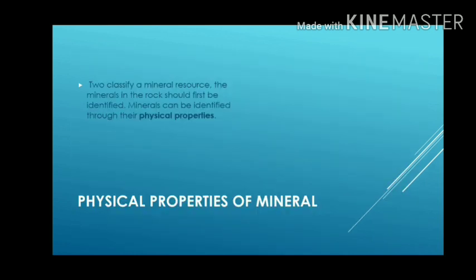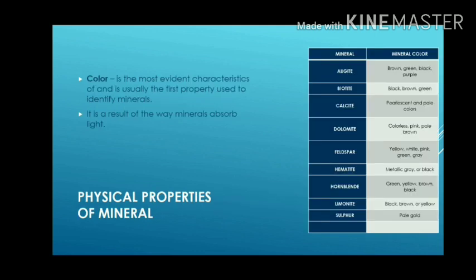To classify mineral resources, the minerals in the rock should first be identified through their physical properties. The first physical property is color. Color is the most evident characteristic of a mineral and is usually the first property used to identify minerals. It is a result of the way minerals absorb light. The minerals in the table include augite, biotite, calcite, dolomite, feldspar, hematite, hornblende, limonite, and sulfur.